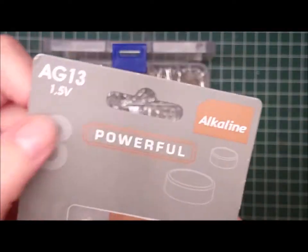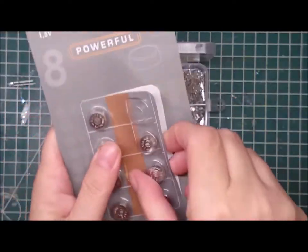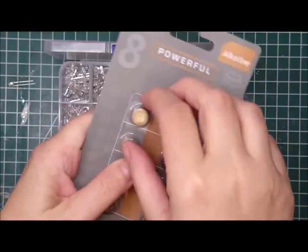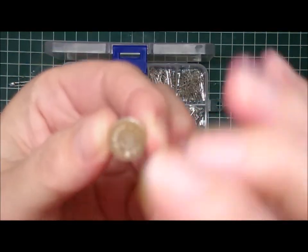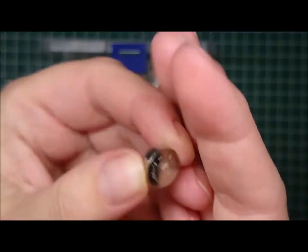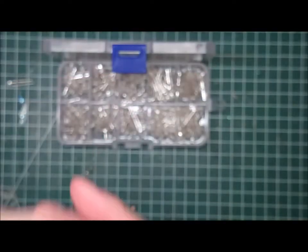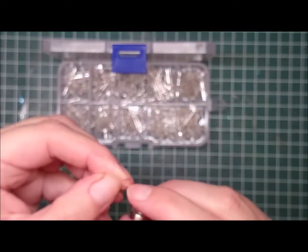And I'm pointing towards the legs. One is longer, one is shorter. And the longer one is the plus, and the shorter one is the minus, which is important because your battery has a plus side, which is this one, and a minus, which is the bumpy one I would say.